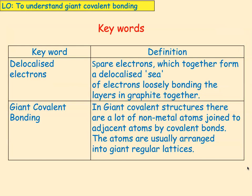In order to understand giant covalent bonding, we need to look at these keywords: delocalised electrons, which we met in metallic bonding, and giant covalent bonding — when you're talking about giants, you're talking about many, many, many atoms all joined together, not just a few.